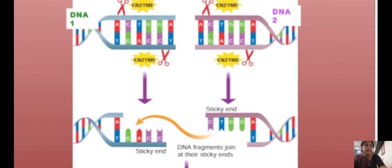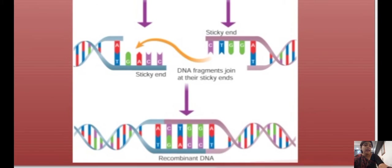These are called sticky ends. For example, the cut fragments — C, T, G, G, A, C — are cut like this, and the complementary fragment G, A, C, C is cut on the other side. These both fragments stick together easily, and the new DNA formed is called recombinant DNA.